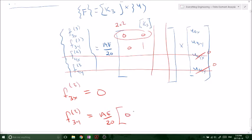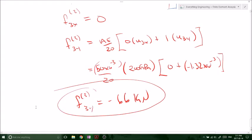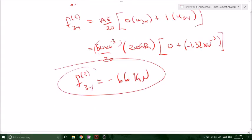So we've got 0 plus negative 1.32 times 10 to the minus 3. So we calculate this out. We're going to get F of 3Y due to member 3 is equal to minus 66 kilonewtons on the dot, right? And we know that since there's no F of X, that F in member 3, the total force in member 3, take the magnitude.